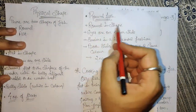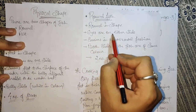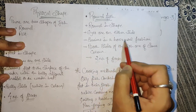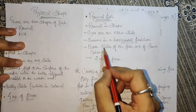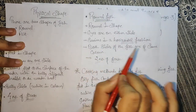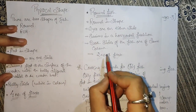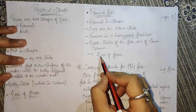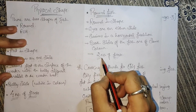Now let's look at round fish — round in shape, with eyes on either side. It swims in a horizontal fashion. Both sides of the fish are the same color — no change. And from a round fish we get only two fillets.